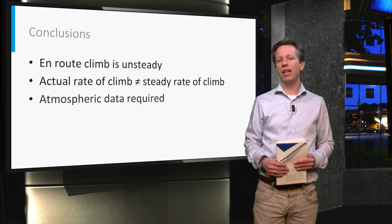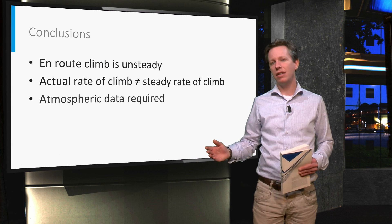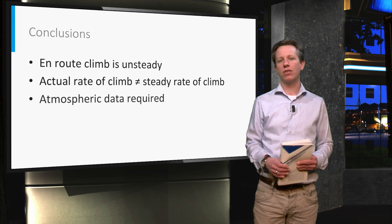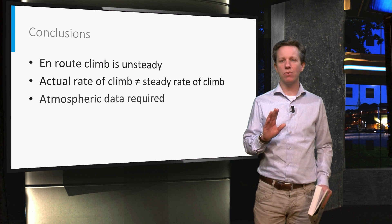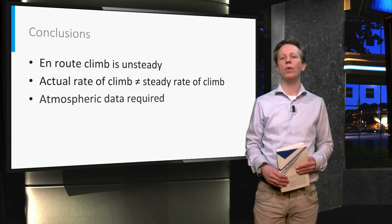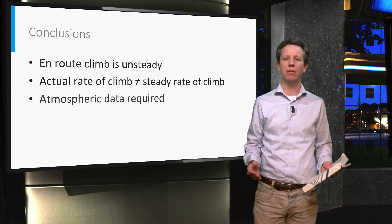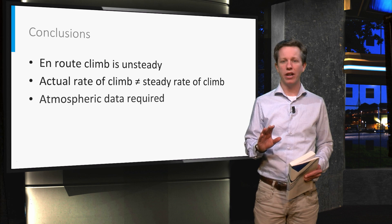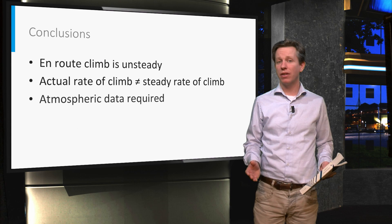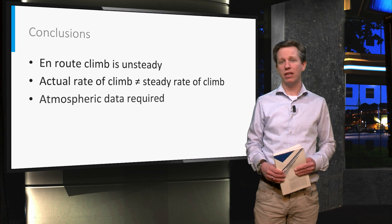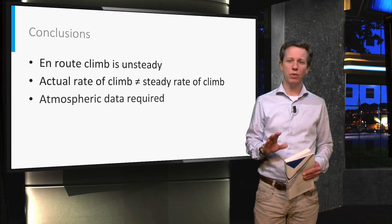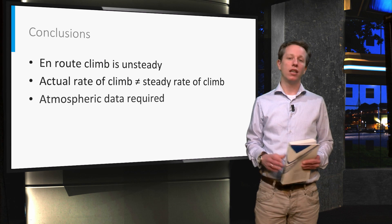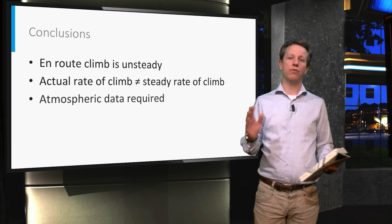To conclude: the aircraft is either accelerating or decelerating in the en route climb — in other words, the en route climb is unsteady. As a result, the rate of climb is quite different from the rate of climb achievable in steady flight with constant true airspeed. Atmospheric data is required to calculate the difference between the actual rate of climb and the achievable rate of climb in steady conditions. I recommend trying these calculations yourself.